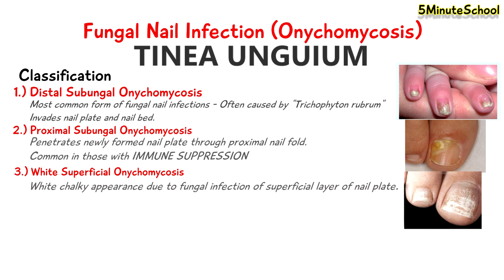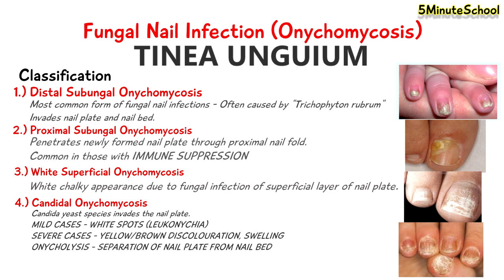The fourth type is called candidal onychomycosis, where the Candida yeast species invades the nails. In mild cases there may just be the appearance of white spots called leukonychia; however, in severe cases there may be yellow-brown discoloration and swelling around the nail fold. Onycholysis may also occur, where we have separation of the nail plate from the nail bed.